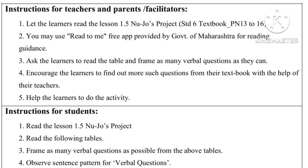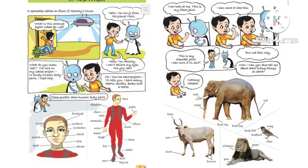Instructions for teachers, parents, and facilitators will not be discussed as they are not important for us. What is important for us are the instructions for students. First, read lesson 1.5, Nujo's Project. This text is available in My English Book 6, Unit 1.5. You will have to read that.